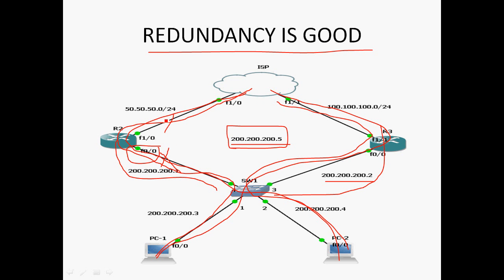If the WAN link goes down, how does the router know? We can configure the track option to track that interface. If the link goes down, it automatically decrements the priority value. Based on the priority value, the router is elected as active or standby. If this link goes down and the priority value decrements, it automatically goes to standby state, and PC1 and PC2 communicate to ISP through R3 router instead.